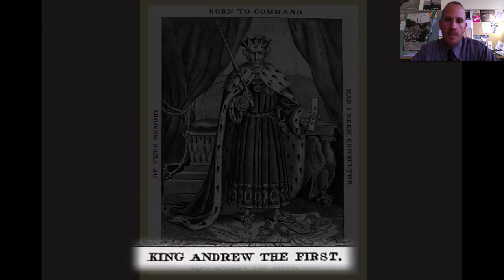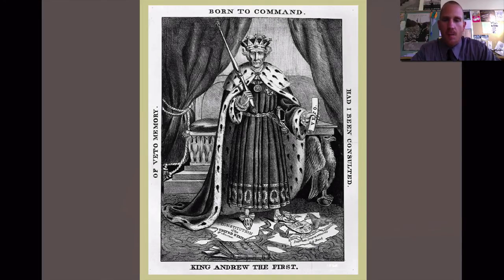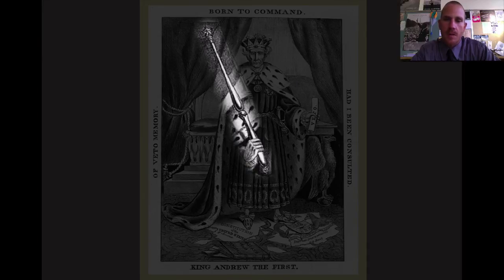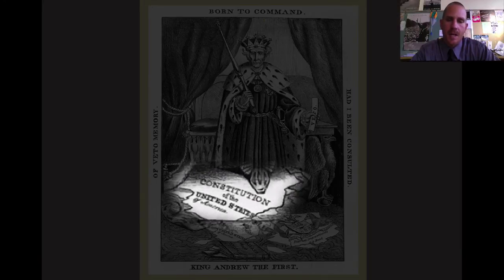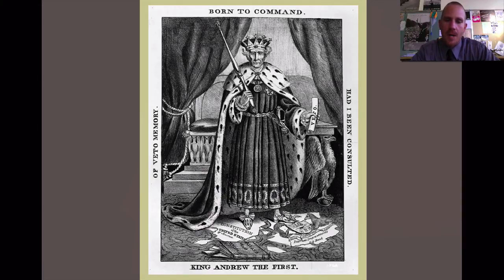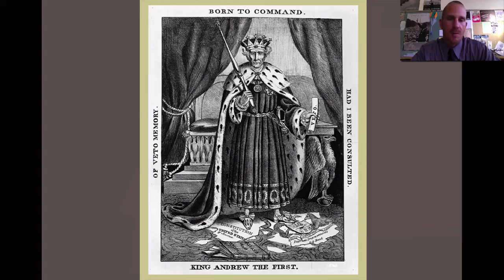We'll leave it with this — check out this political cartoon of King Andrew I. It's depicting Andrew Jackson as a king. Check out what he's holding in his hand: a scepter and also the power of the veto. And look at what he's standing on — it's the Constitution of the United States. He's standing on the Constitution because he's exerted so much power as president that he's almost acting like a monarch. At the top it reads 'born to command.' We're not going to see this type of power from the office of the president for about another 30 years, when Abraham Lincoln leads us into the Civil War.